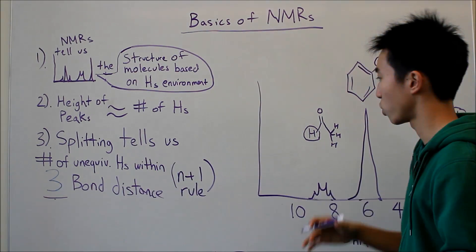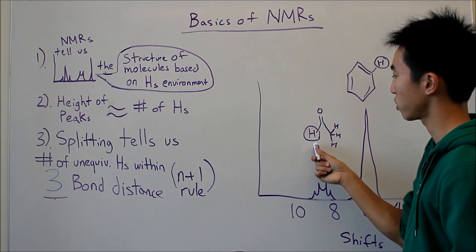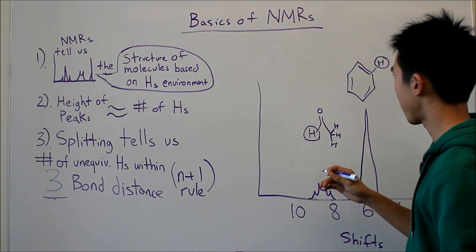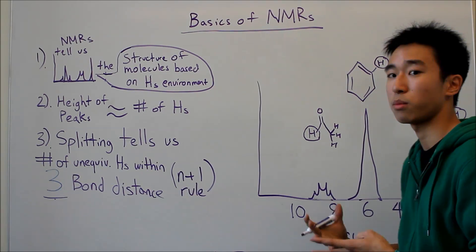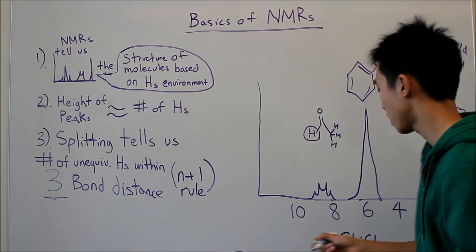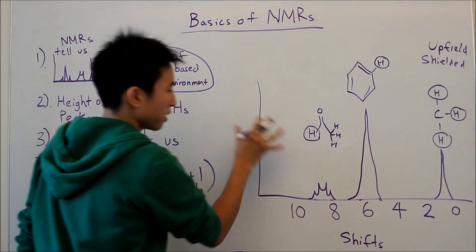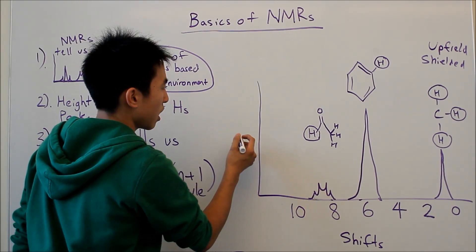And then if your proton is more deshielded, like this functional group that I explained in the last video, then chances are the proton is going to shift more because it's going to feel more of the effects of the magnet, so the shift number is going to be higher. So then what we call this side of the NMR is basically downfield.